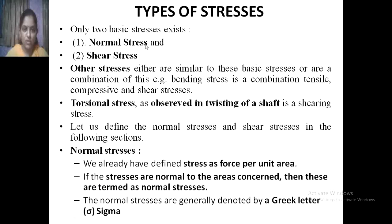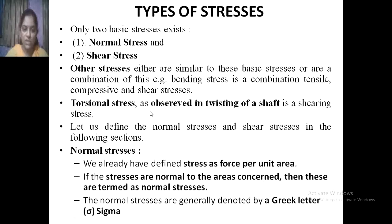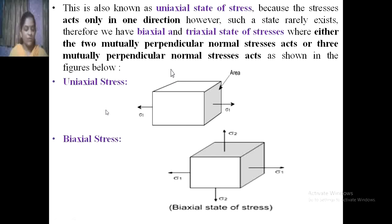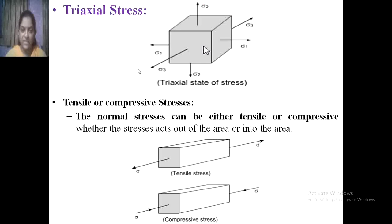Types of stresses include normal stress and shear stress. Other stresses are combinations of basic stresses: bending stress is a combination of tensile and compressive stress; torsional stress is observed in twisting of a shaft as well as normal stress. Stress can be uniaxial (one direction), biaxial (two directions), or triaxial (three-dimensional). Tensile and compressive stresses are pulling outward and pushing inward respectively.